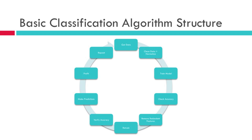This is a basic algorithm structure for classification. First we're going to get some data, then clean it up and normalize it, just like I discussed. Then we'll train the model — we'll create labels like 1s and 0s for the training set — and train the model so it can make future predictions. Then we'll check the accuracy using a test sample, feed it the test sample and see if it gets the predictions right. Based on that, we'll remove redundant features and do dimensionality reduction, then retrain the model and check the accuracy again, hopefully higher.